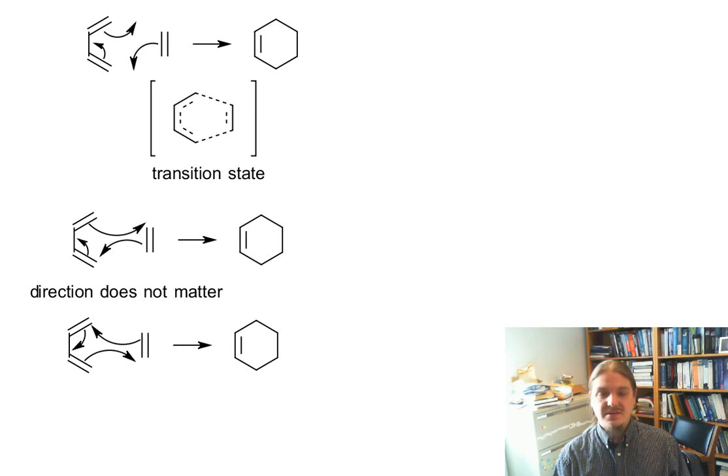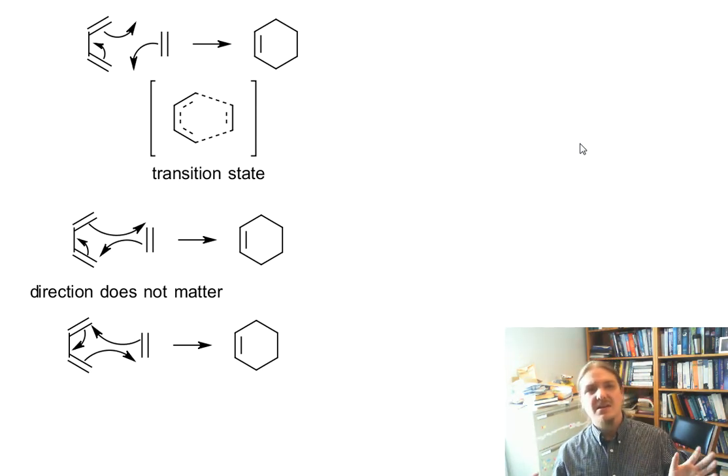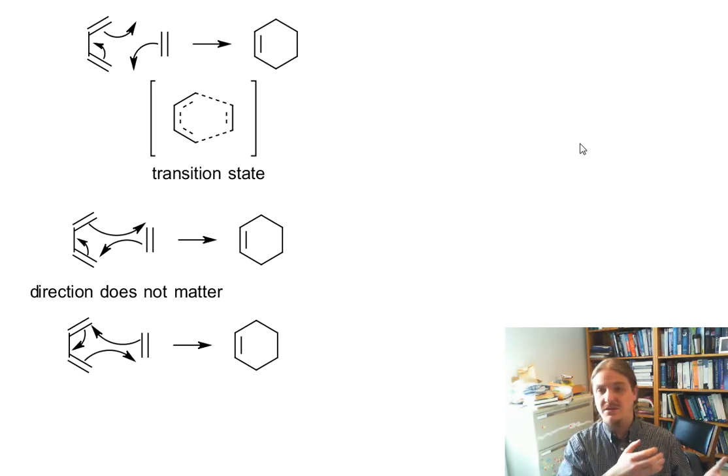There really isn't this directionality. The cyclical nature of the transition state is to help you understand that there's not a starting point and an ending point to this reaction. We have studied other concerted reactions where there is a clear starting point. There's a nucleophile that attacks, there's a leaving group that leaves. Even though they're both happening at the same time, it feels like without the nucleophile there, the leaving group might not just leave. So the nucleophile clearly is the starting point.